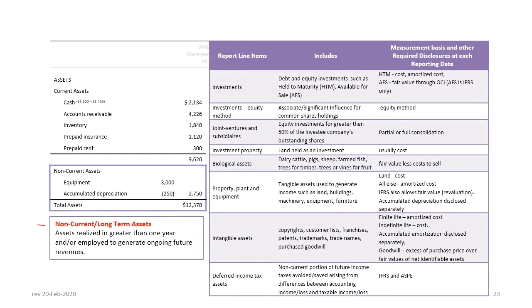Non-current or long-term assets are those realized in greater than one year or employed to generate future ongoing revenues. Long-term assets can include investments in joint ventures, property, biological assets, property plant and equipment, intangible assets, and deferred income tax. Certain investments are carried at amortized cost while others are carried at fair value. The rules are very similar for both IFRS and ASPE, with the exception of investments and deferred or future income taxes.